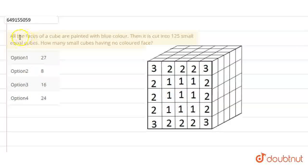Hello student, the question is: all the faces of a cube are painted with blue color, then it is cut into 125 small equal cubes. How many small cubes have no colored surface?